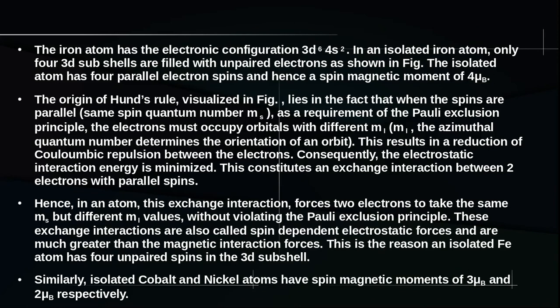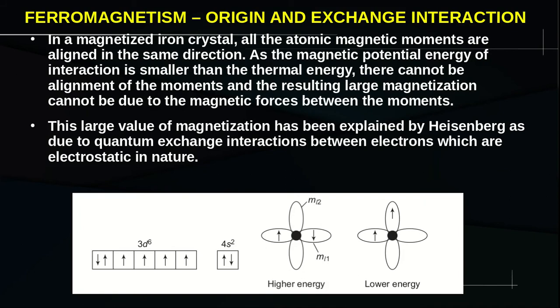The iron atom has the electronic configuration 3D6-4S2. In an isolated iron atom, only 4 of the 3D sub-shell states are filled with unpaired electrons, as shown in the figure. The origin of Hund's rule, visualized in this figure, lies in the fact that the spins are parallel — meaning MS is the same — and to satisfy the Pauli exclusion principle, the electrons have to occupy different ML states.